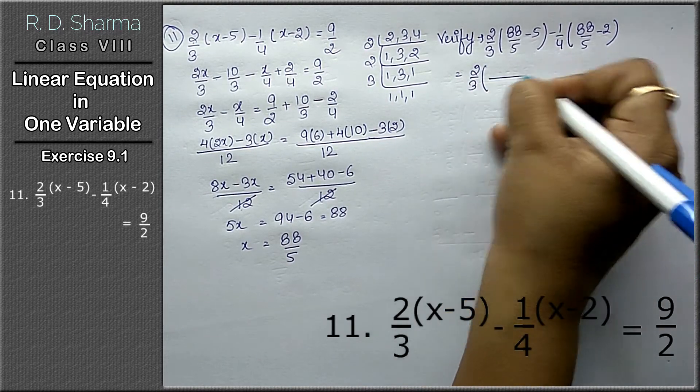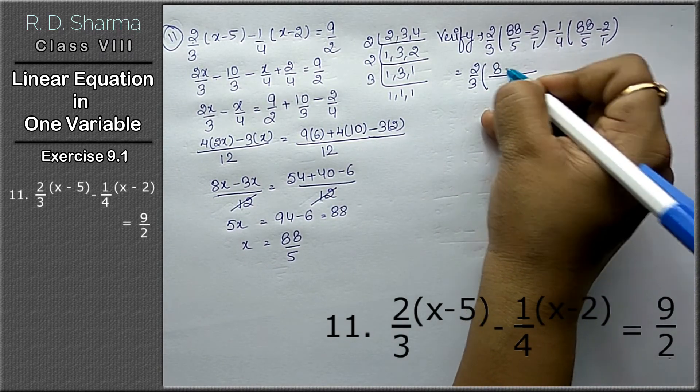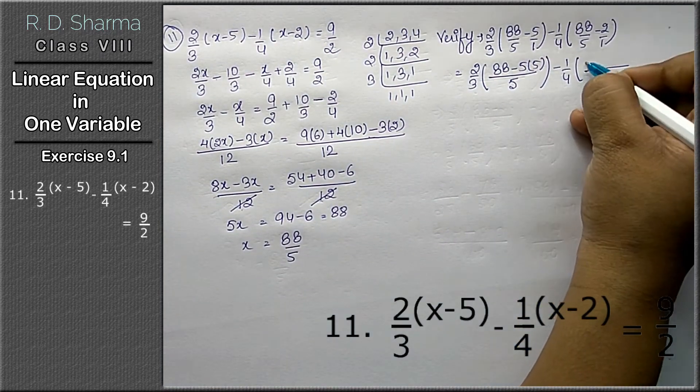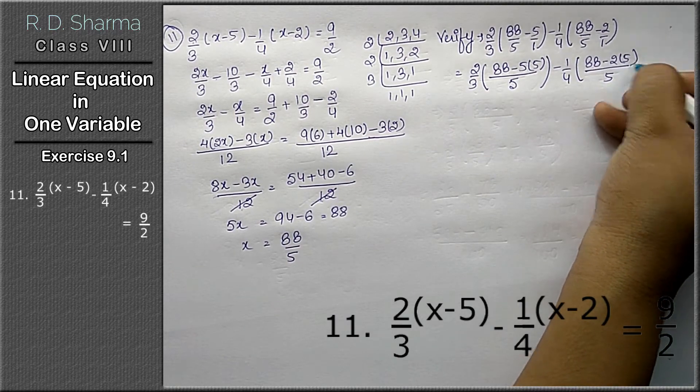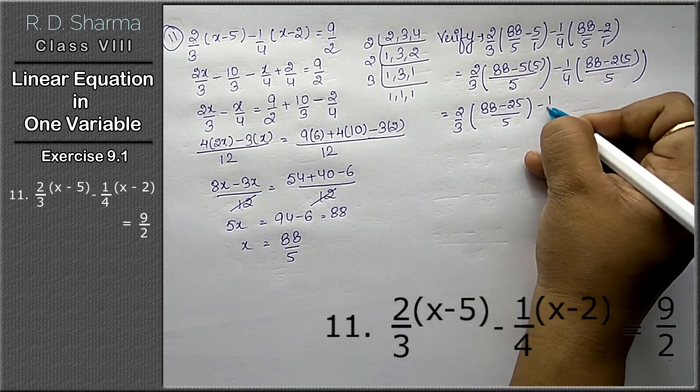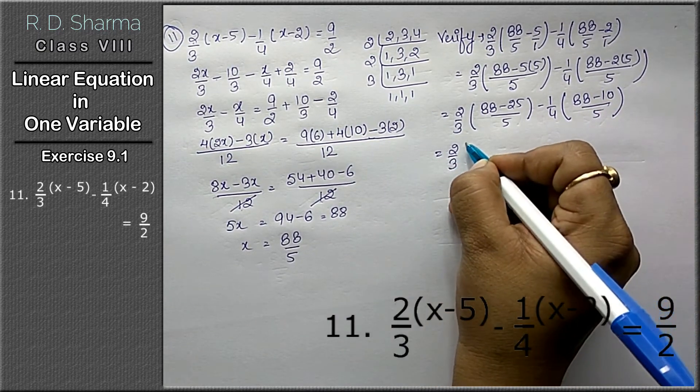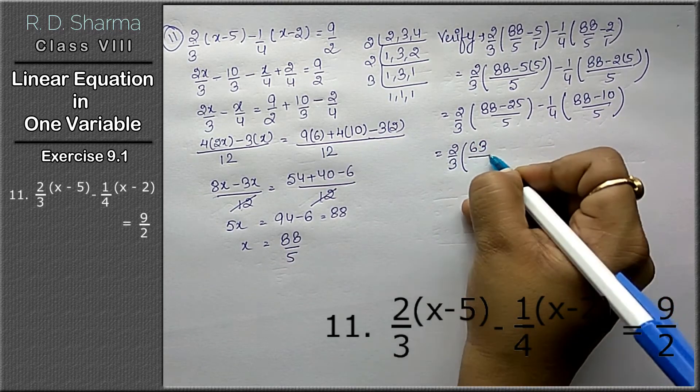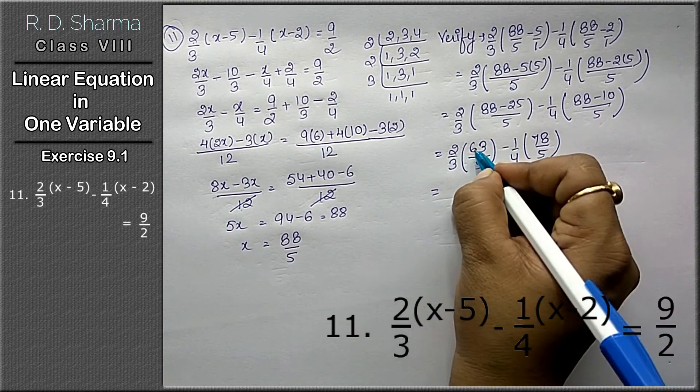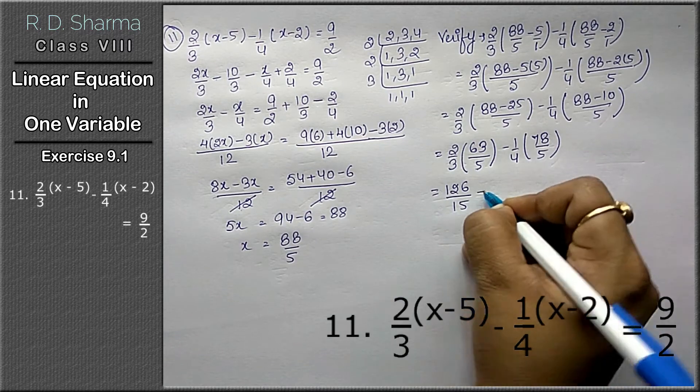First we'll take the LCM. LCM of 5 is 5. (88 minus 25) upon 5 minus 1 upon 4 (88 minus 10) upon 5. That's 2 upon 3 times 63 upon 5 minus 1 upon 4 times 78 upon 5. Now multiply: 63 times 2 is 126 upon 15 minus 78 upon 20.